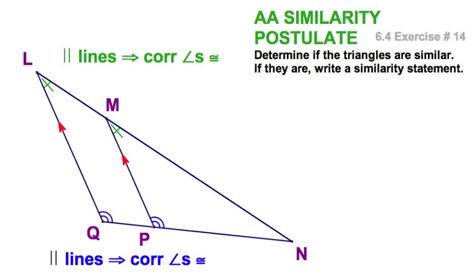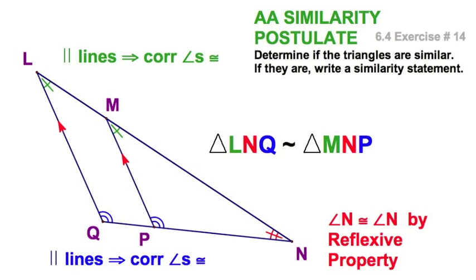Well, you could have used those two, or one of those, and angle N being used twice. In any event, pick any two of those, and you've got similar triangles.